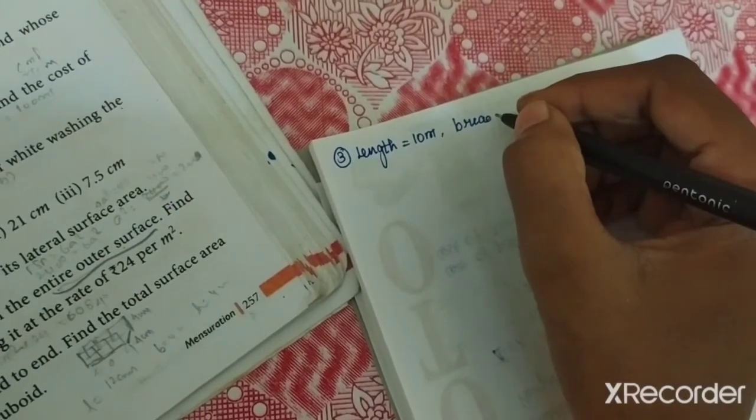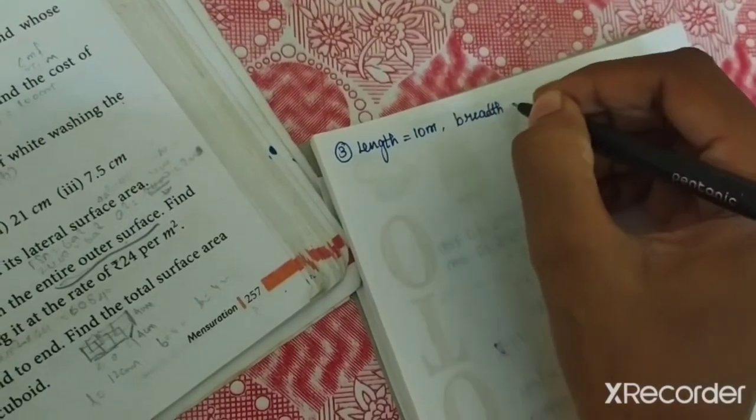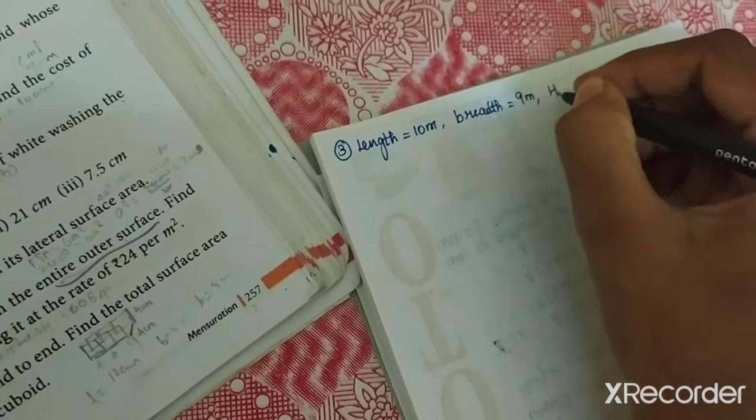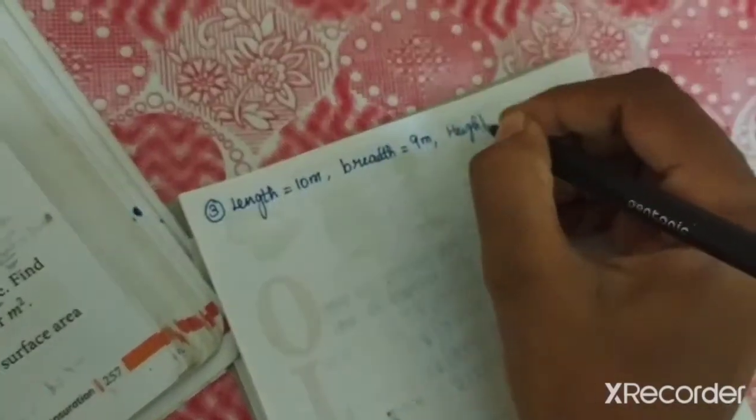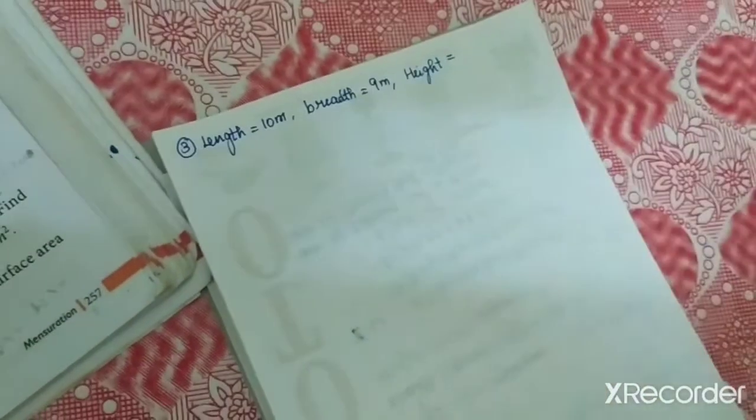The unit of length, breadth, height should be the same. If you have centimeter, it should be centimeter. If you have meter, it should be meter. That is how we told you.